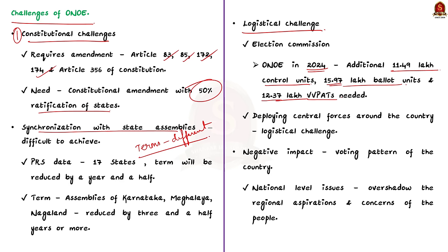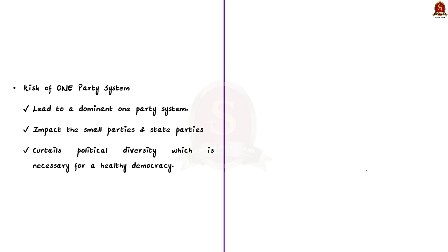Fourthly, it will have a negative impact on the voting pattern of the country. When elections are held at the national level, national issues will overshadow regional aspirations. Finally, it may lead to the risk of a one-party system, where the party winning the national elections may also win the state elections, thereby impacting small parties and state parties. These are the major challenges associated with One Nation, One Election.